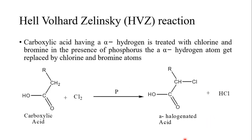The seventh reaction is the Hell-Volhard-Zelinsky (HVZ) reaction. Carboxylic acid having alpha hydrogen is treated with chlorine or bromine in the presence of phosphorus, and the alpha hydrogen atom gets replaced by chlorine or bromine atoms. Alpha hydrogen refers to any hydrogen on the carbon directly adjacent to the functional group.